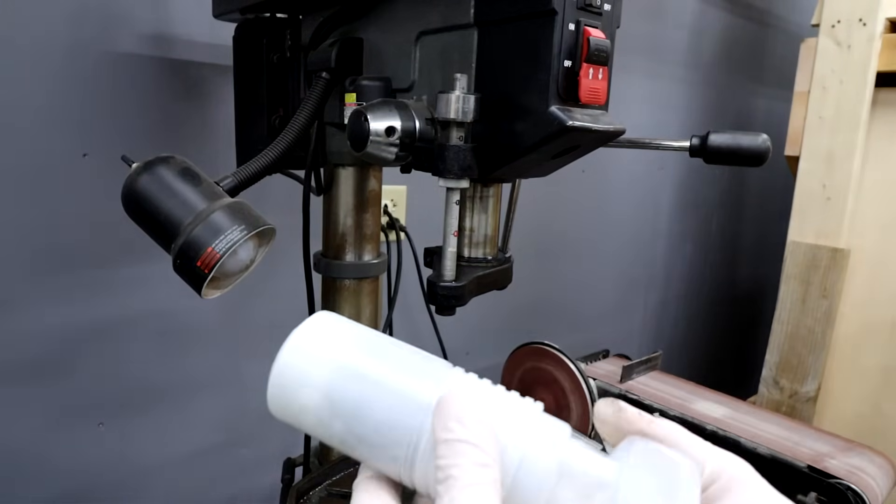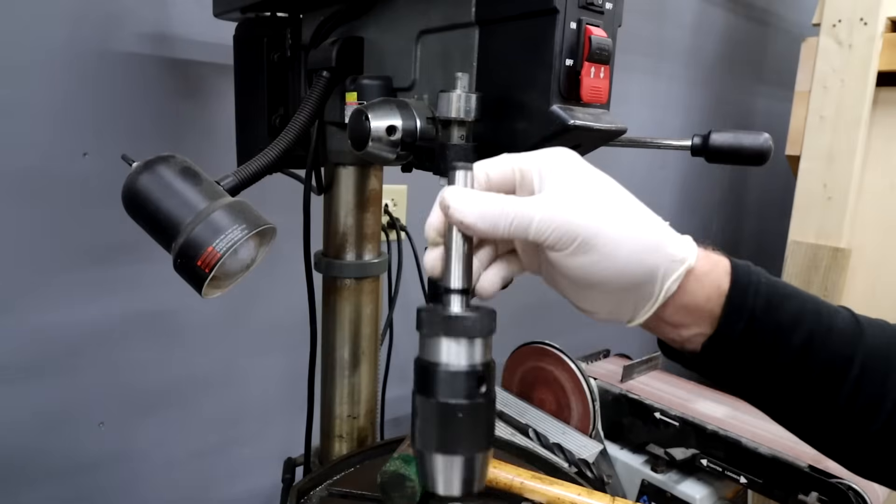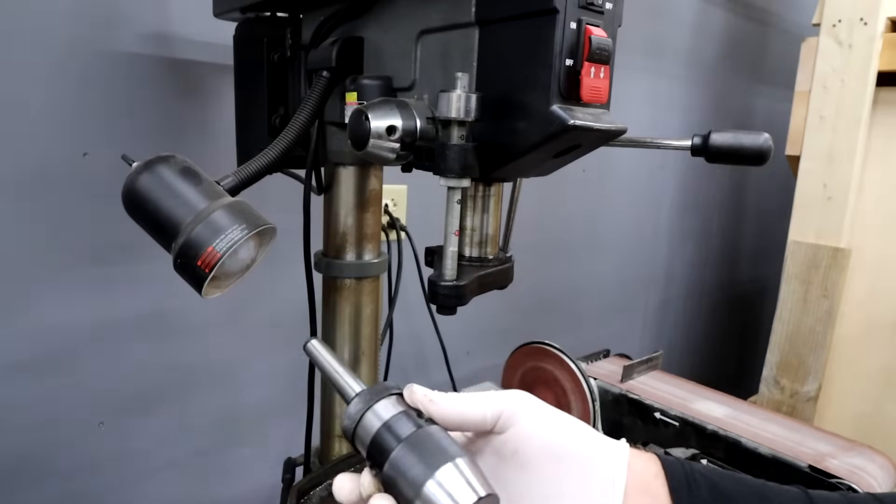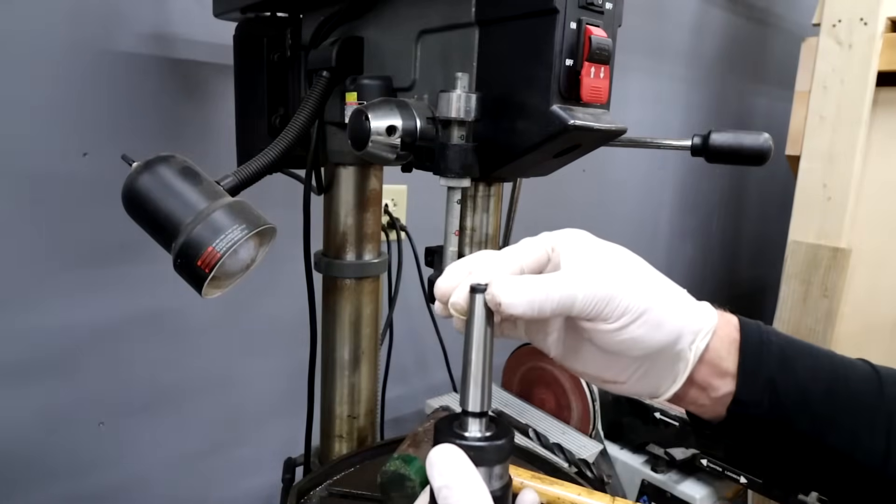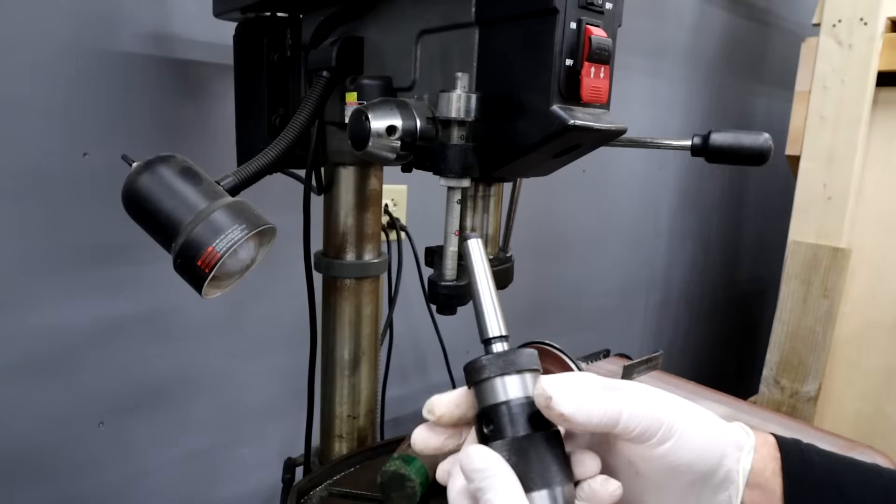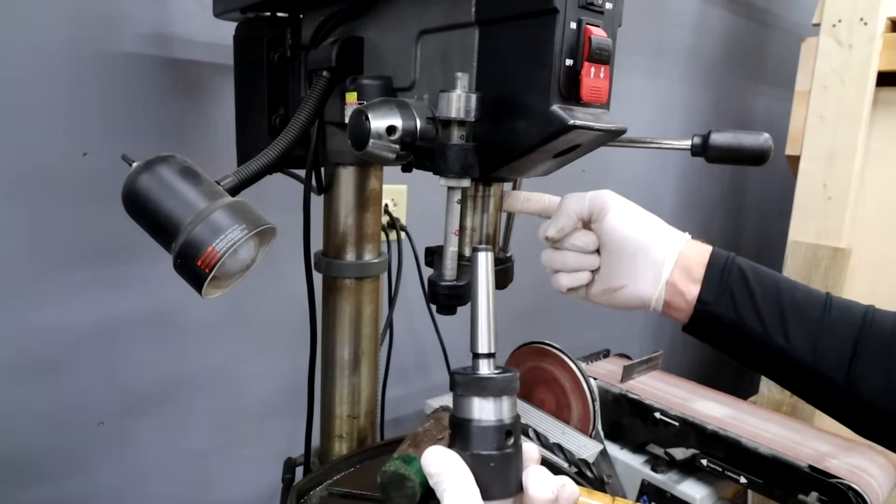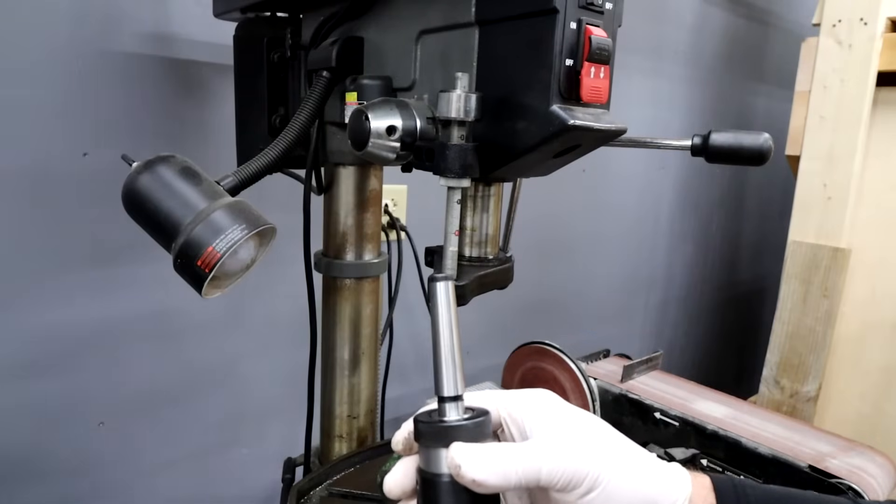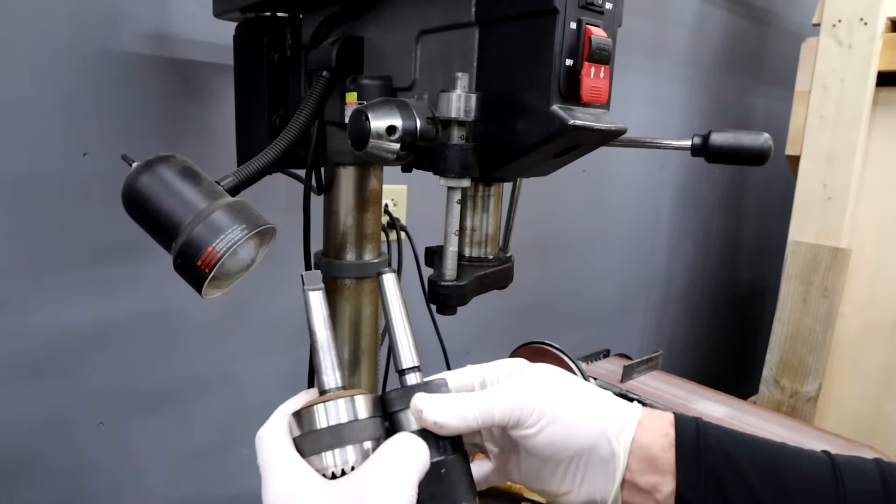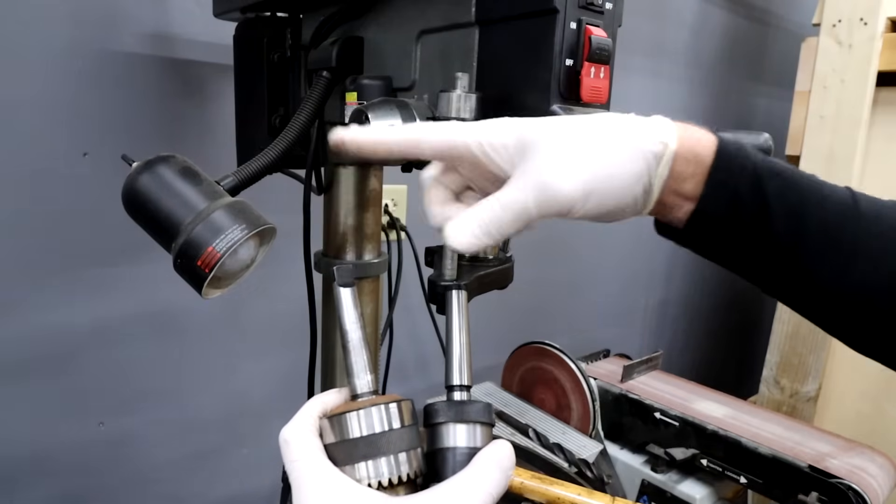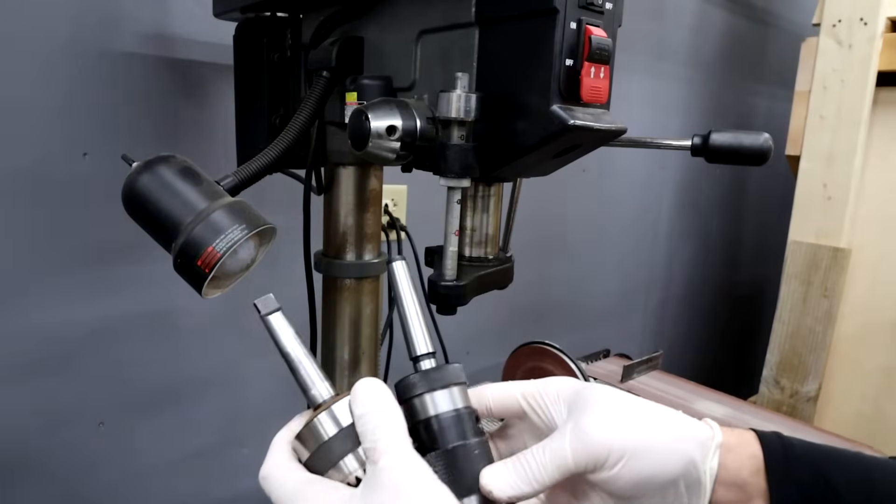Now the problem I did have with this chuck, even though this chuck is listed as a Morse taper number two, which it is theoretically, the problem is if I insert this in there, I don't have a tab that sticks up that allows me to knock it out. You can see here my original Morse taper number two has this little tab that allows me to knock it out. So I am not going to use this piece of this new chuck.